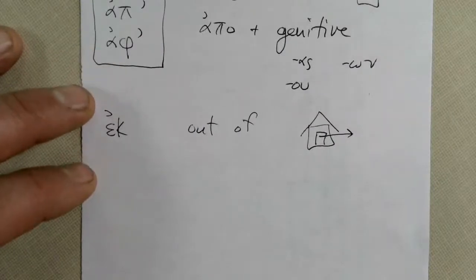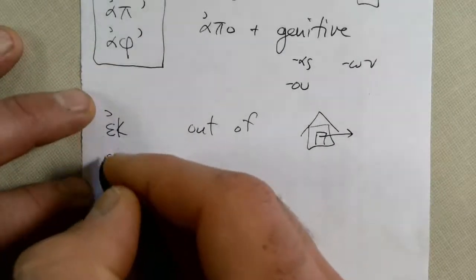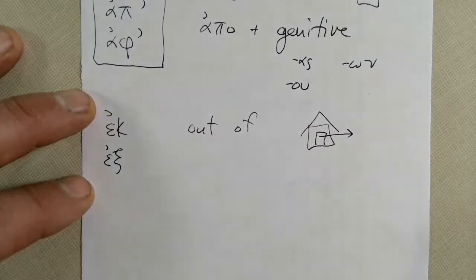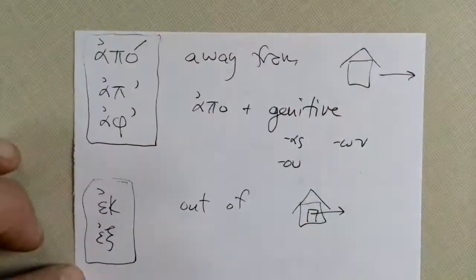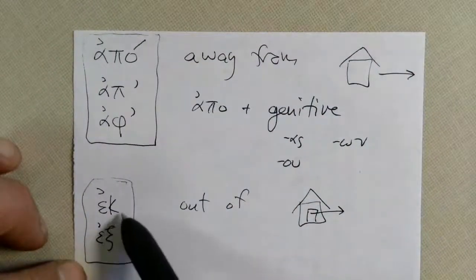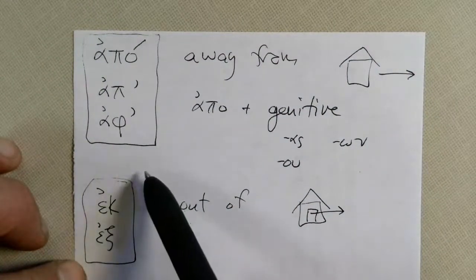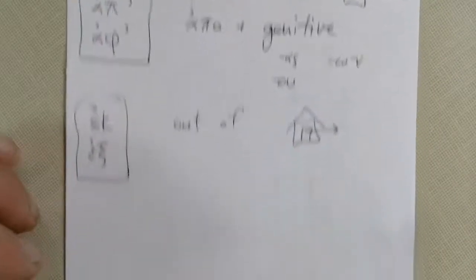Now ek will sometimes look like ek and will sometimes look like x. Both of them mean the same thing, just like an Apo. So don't be confused. They just change the ending a little bit to make it sound better. Here are some examples.